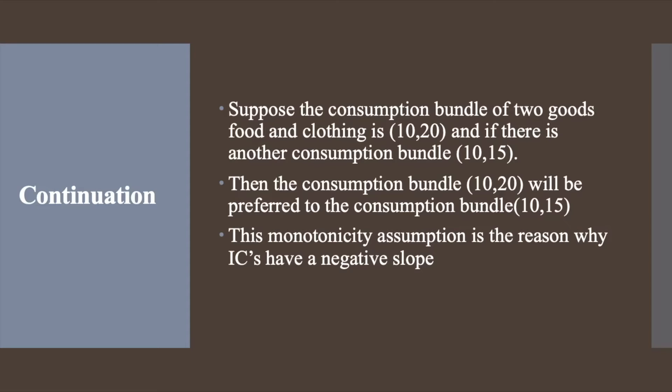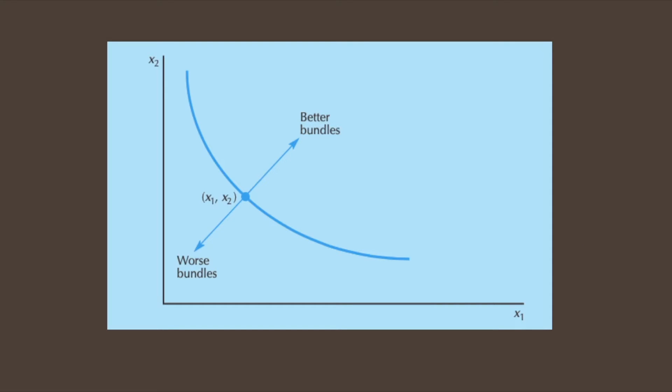This monotonicity assumption is the reason why ICs have a negative slope. As we discussed earlier, if we start at a bundle (x1, x2) as given in the figure and move anywhere up to the right, we must be moving to a preferred position. If we move down and to the left, we must be moving to a worse position.